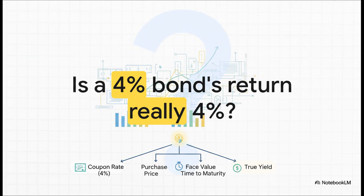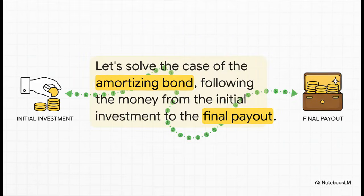So you see a bond out there says it has a 4% coupon and you think, okay, I'm going to earn 4%. But is that the whole story? Not even close. That coupon rate is really just one clue. The real return, the actual cash you'll pocket, is almost always a totally different number. So how do we find it? We're going to solve this whole thing by cracking a case study. We're just going to follow the money step by step from the minute you invest to the very last payout.